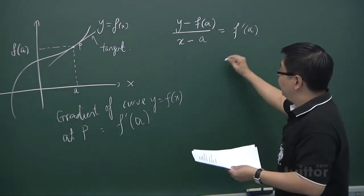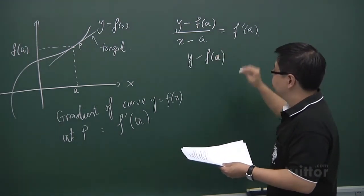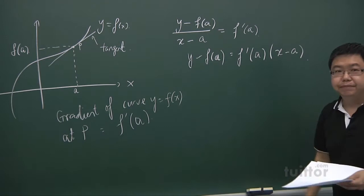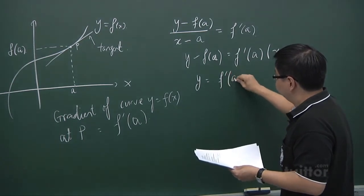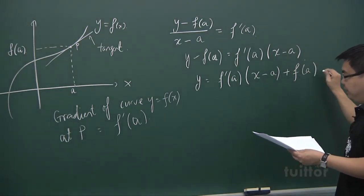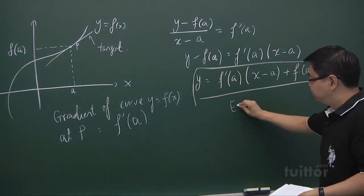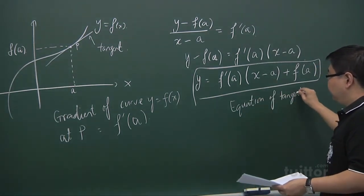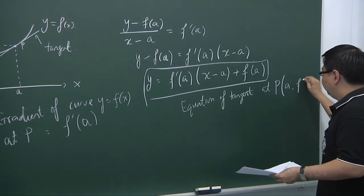And then rearranging it, you have y minus f(a) equals f prime of a times (x minus a). And of course this becomes y equals f prime of a times (x minus a) plus f(a). This is the equation of the tangent at the point P, which is (a, f(a)).